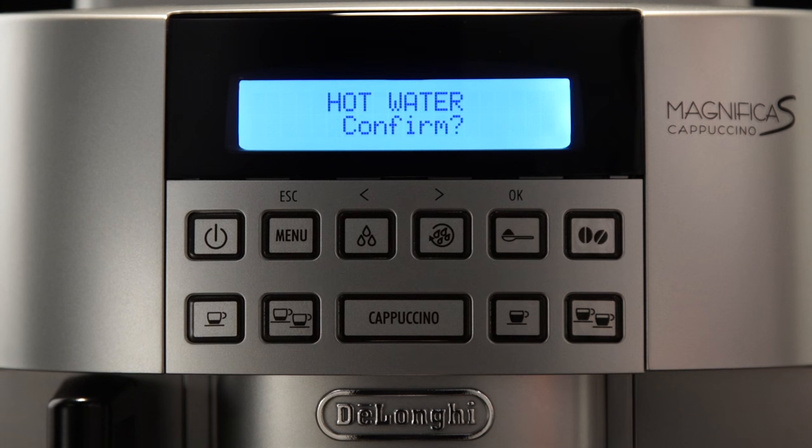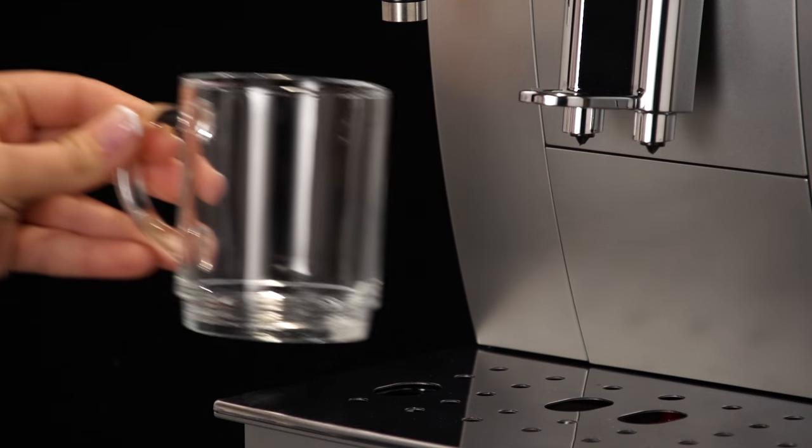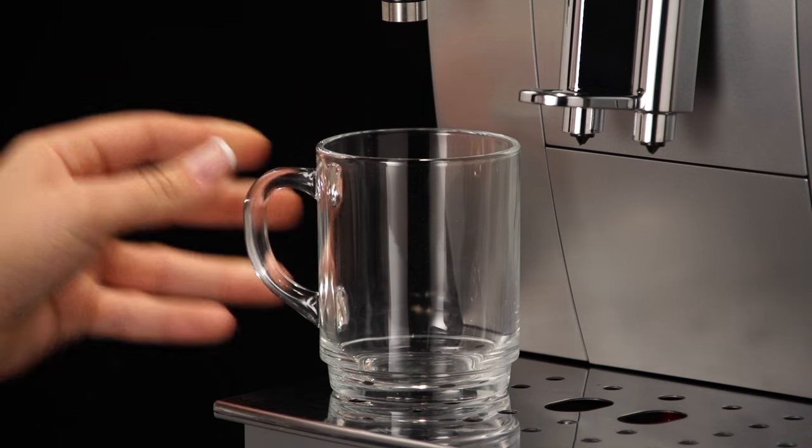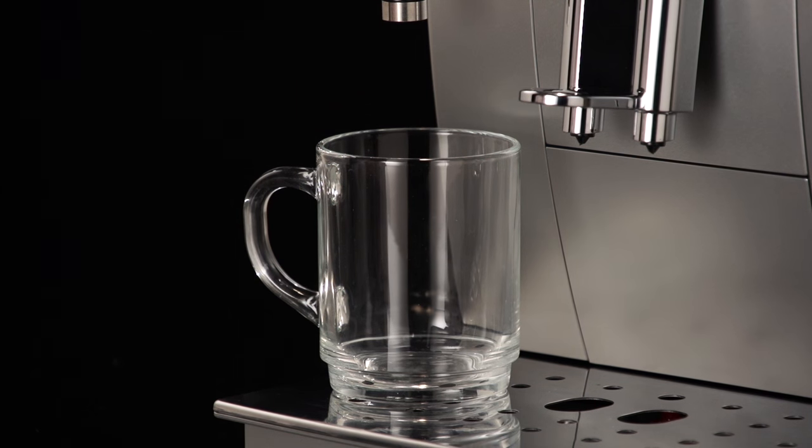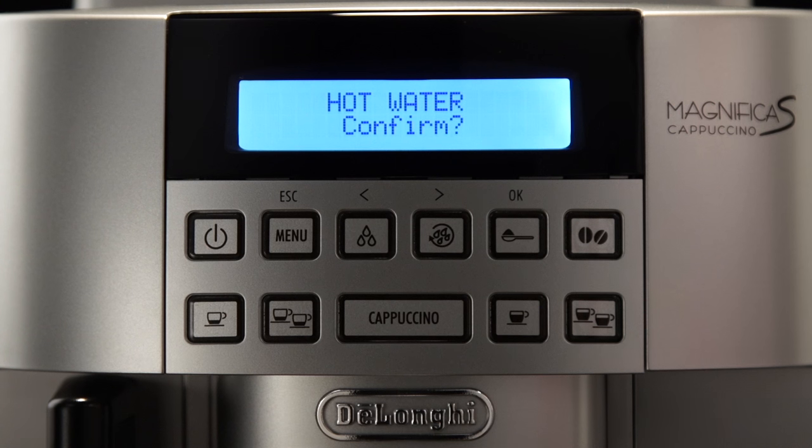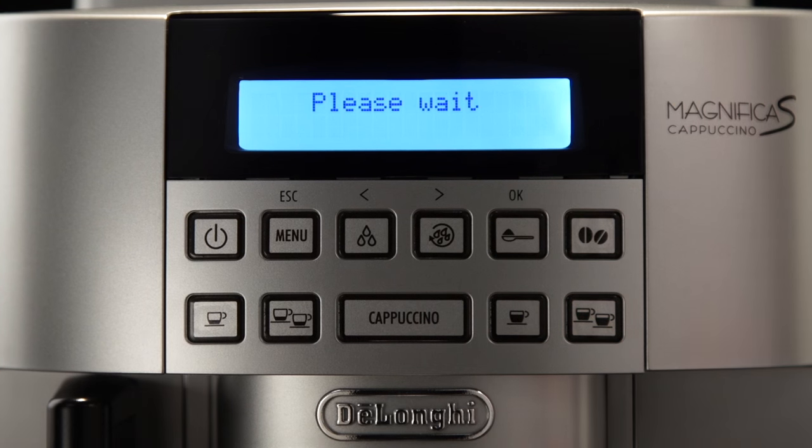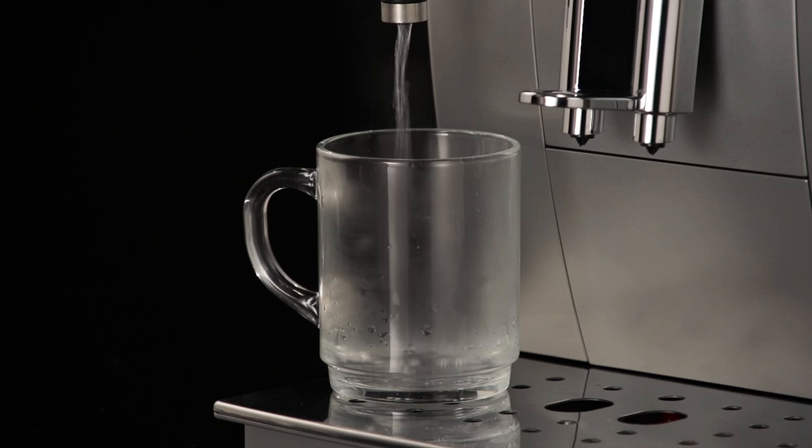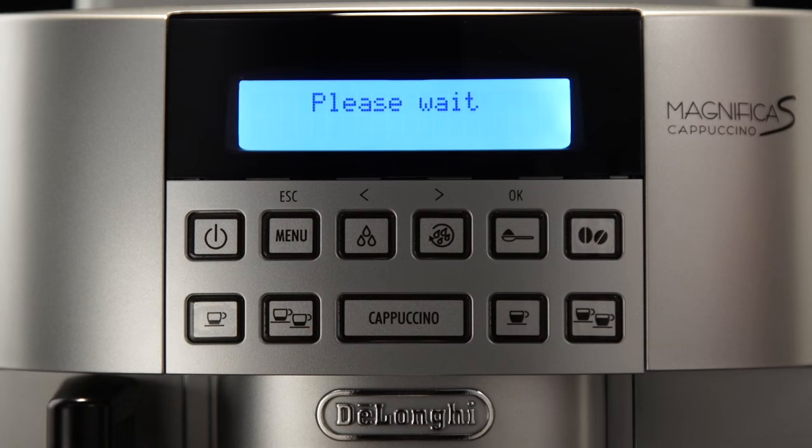'Hot water confirm' is displayed. Position a container with a minimum capacity of 100 milliliters under the spout. Press the OK button to confirm the selection. The appliance begins hot water delivery and the message 'Please wait' is displayed.